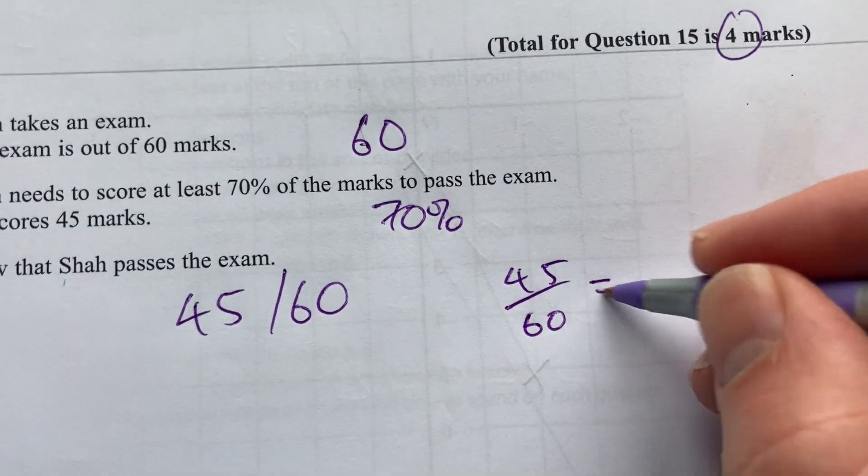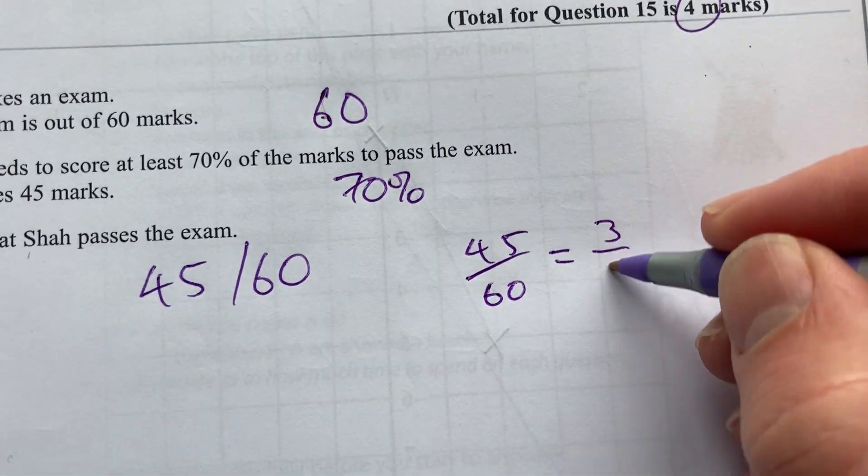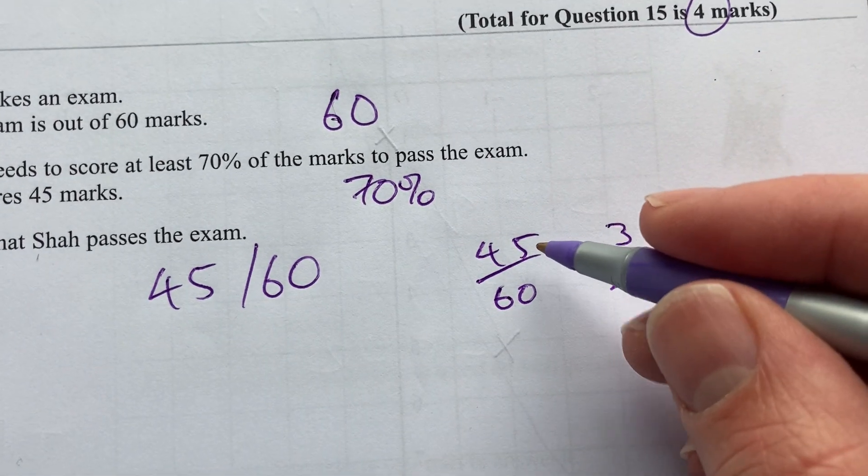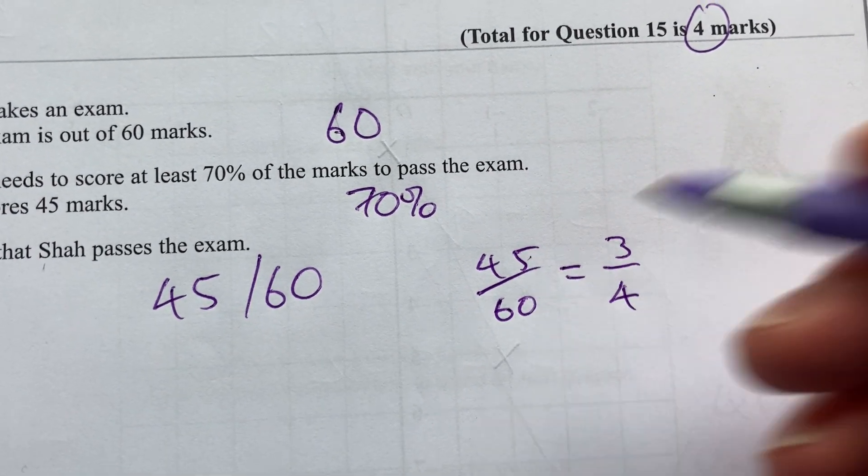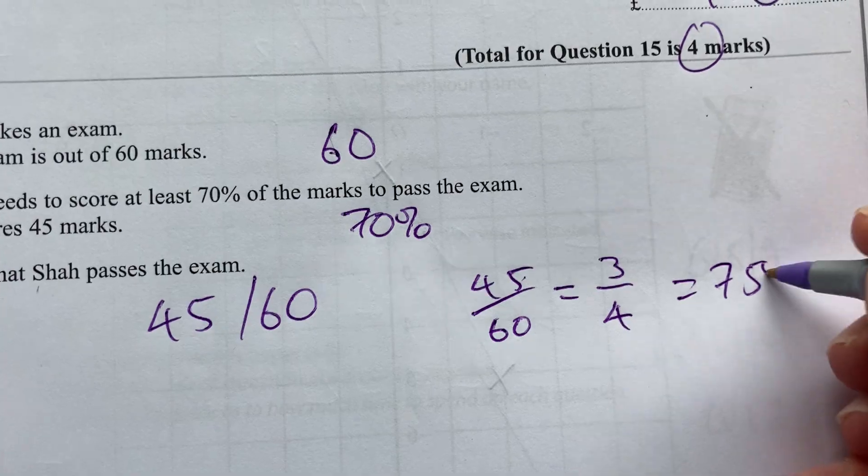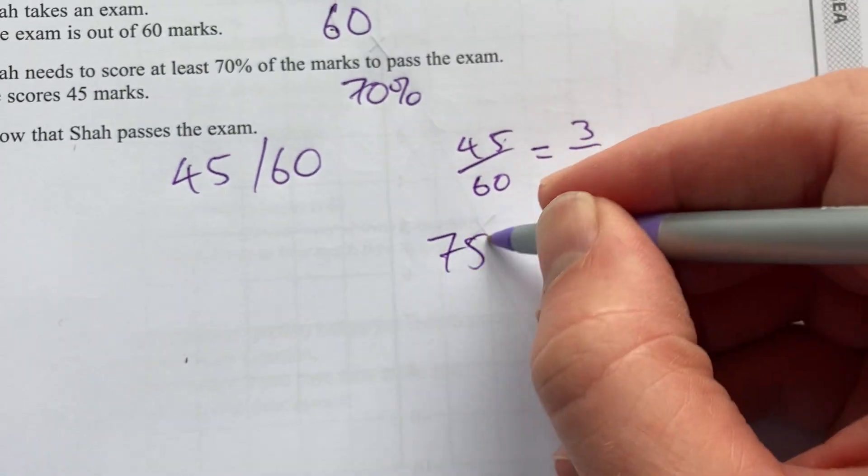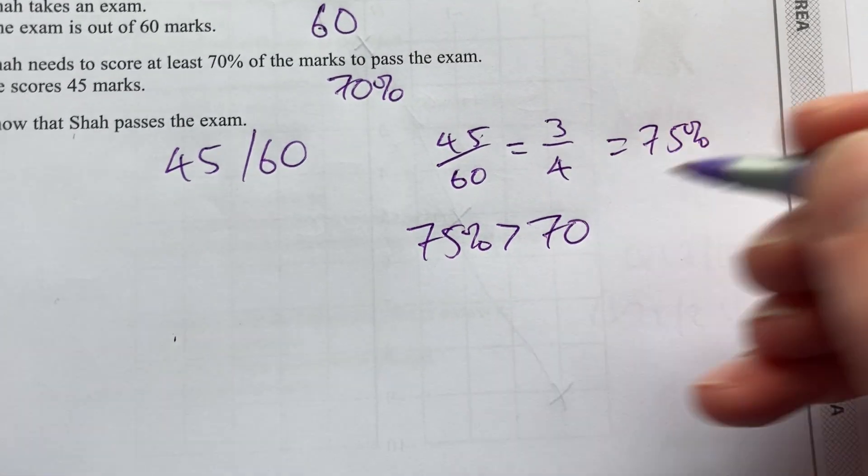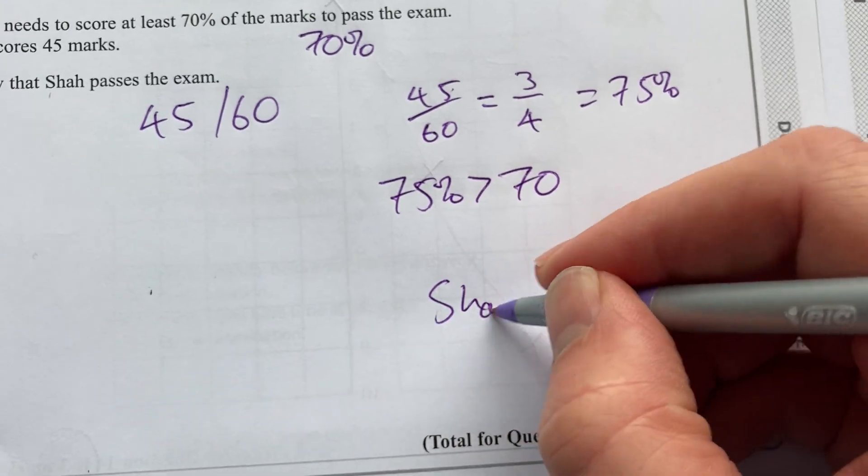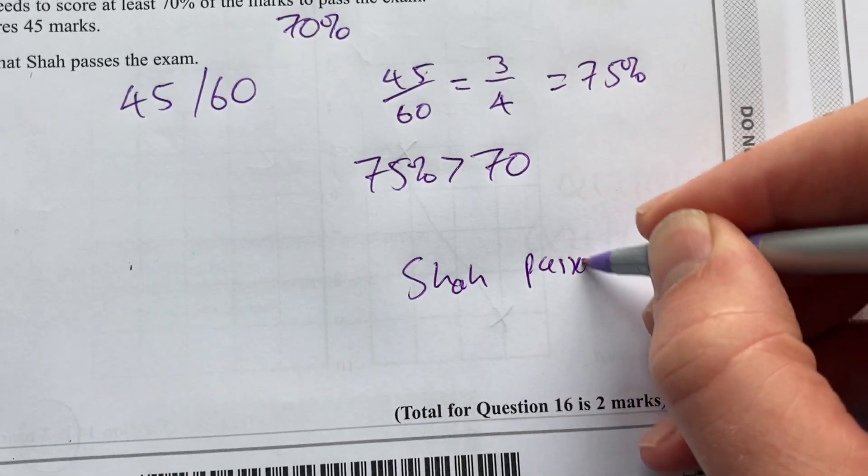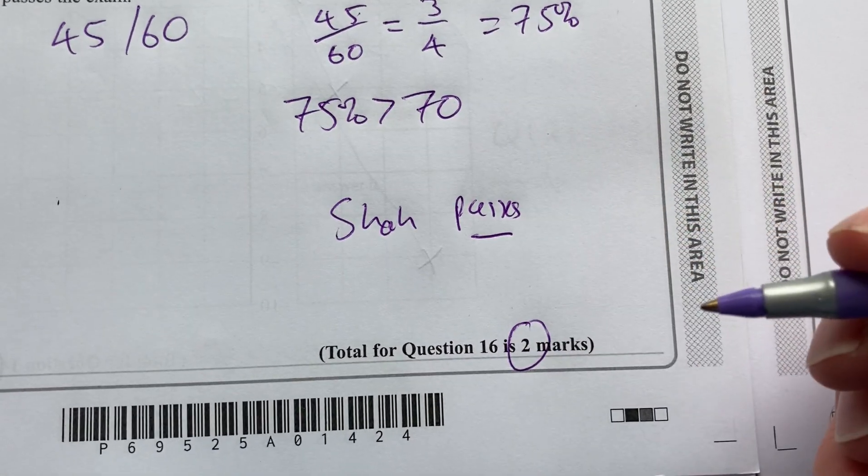Anyway, reduce that as a fraction. I know that that's three quarters because there's three 15s and there's four 15s, which is 75%. And 75% is greater than 70. So Shah passes. Okay, two marks there.